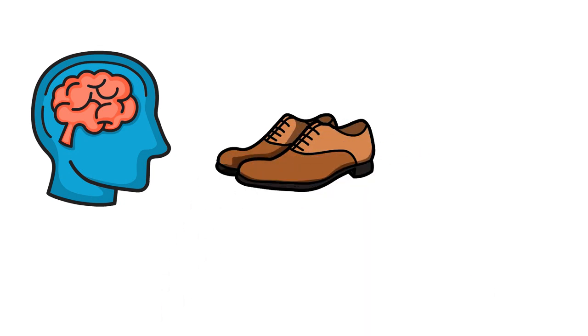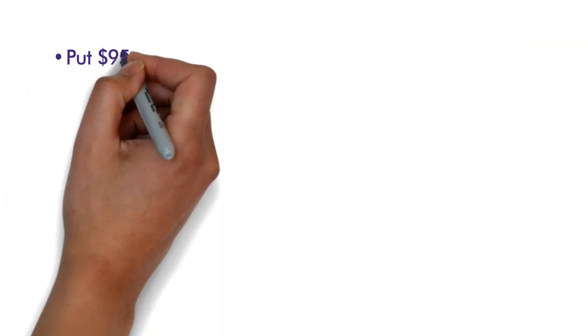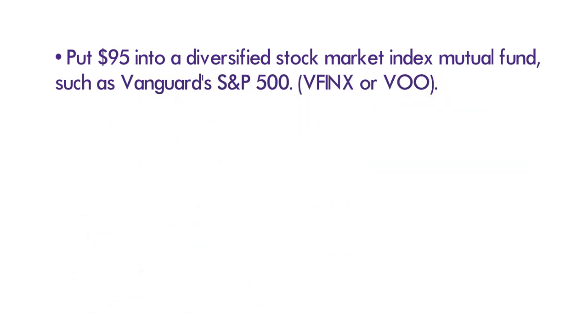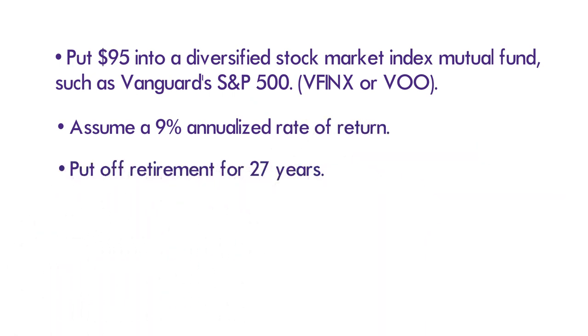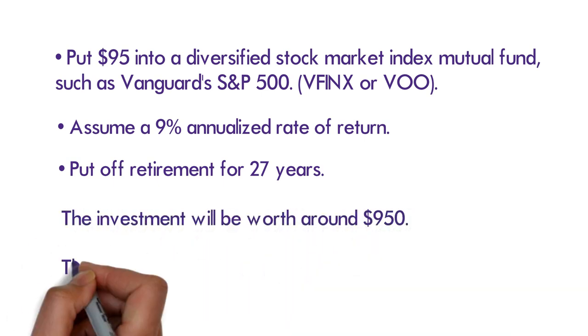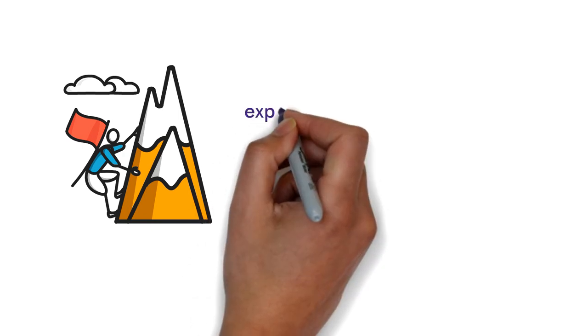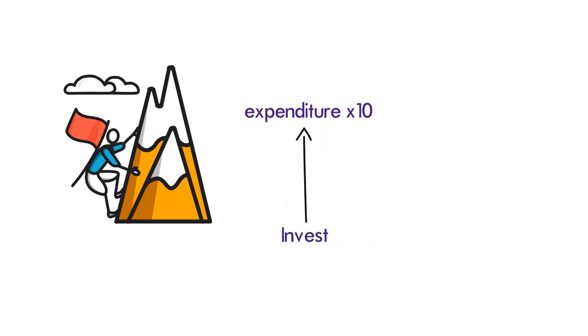Before you spend, think, wait, and evaluate. Consider whether the $95 pair of shoes or new headphones you want today are worth sacrificing $950 in retirement. Here's how investing, rather than spending, works. Put $95 into a diversified stock market index mutual fund, such as Vanguard's S&P 500 index or VOO. Assume a 9% annualized rate of return. Put off retirement for 27 years. The investment will be worth around $950. That is the power of compounding. You are sacrificing your tomorrow every time you spend money on something that does not provide a return. A simple rule of thumb is to multiply your expenditure by 10. That is an estimate of how much money you could have in retirement if you invested instead of spent it. Is it worth it to spend $100 on dinner if you could save $1,000 in retirement?